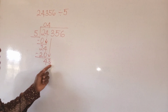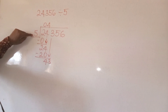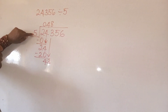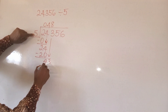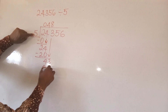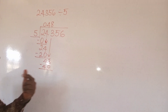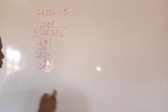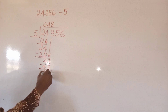Twenty-four divided by five — I'm going to have just four, because four times five will give me twenty. So we subtract again and we have four. Bring down three. Then forty-three divided by five — I'm going to have eight. Eight times five will give me forty. Remember: divide, multiply, and subtract.